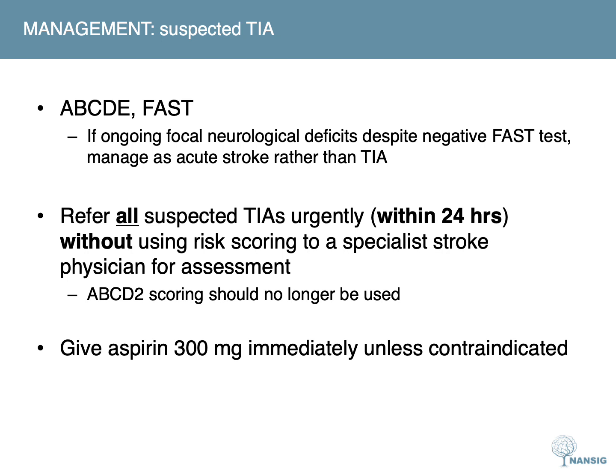As for stroke, the primary survey and FAST test are used in the acute setting for a TIA. A patient with ongoing focal neurological deficits despite a negative FAST test should be managed as acute stroke rather than TIA. Historically, patients with a suspected TIA were admitted based on their ABCD2 score, which predicted the seven-day risk of stroke following a suspected TIA. However, new NICE guidance in 2019 states that all patients with suspected TIA should be referred urgently — within 24 hours — to a specialist stroke physician for assessment, without using such risk scoring systems. Meanwhile, the patient should be given 300mg of aspirin immediately unless contraindicated.